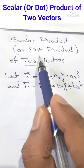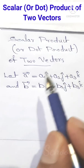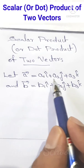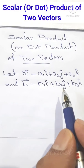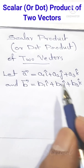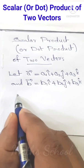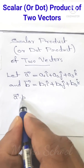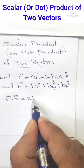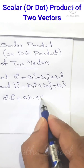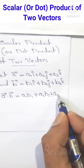Scalar product or dot product of two vectors. Let vector a equal to a1i plus a2j plus a3k, and vector b equal to b1i plus b2j plus b3k. Then their scalar product or dot product, a dot b, equals a1b1 plus a2b2 plus a3b3.